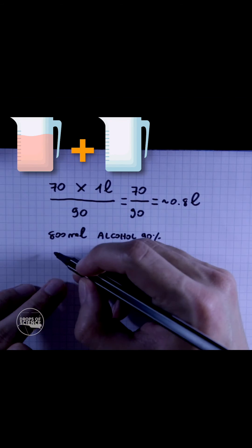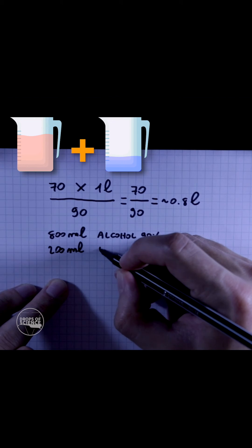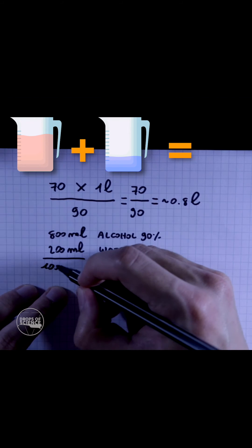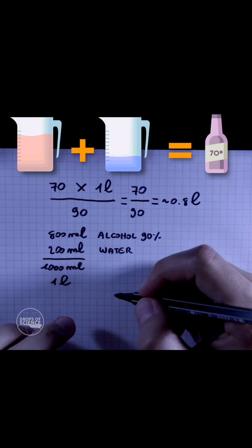So to make up to one liter, we just add 200 ml of water. This in total will be 1000 milliliters, which in the end is just effectively one liter, and this solution you have at the end is one liter of alcohol 70%.